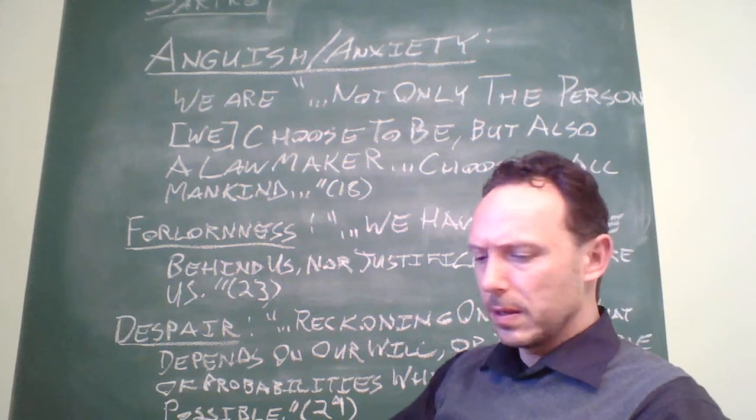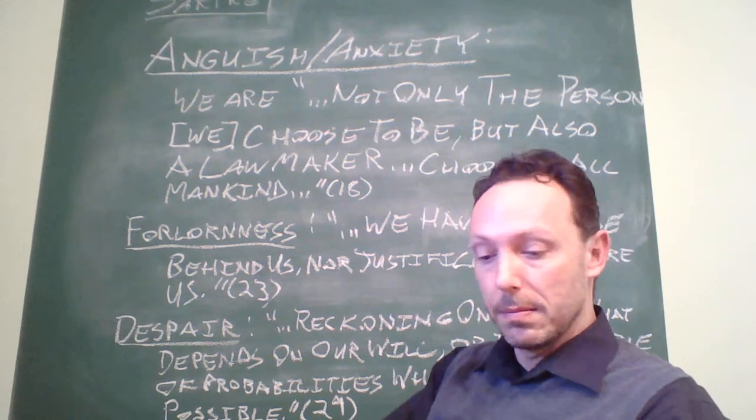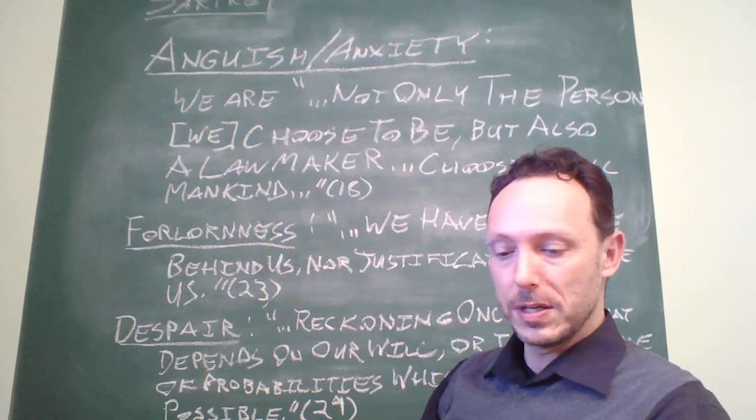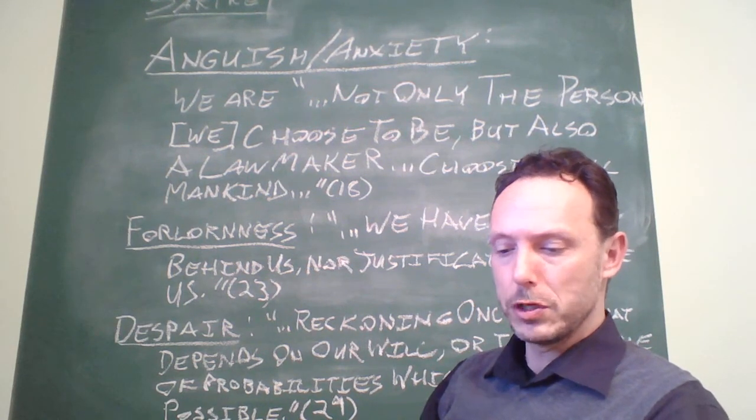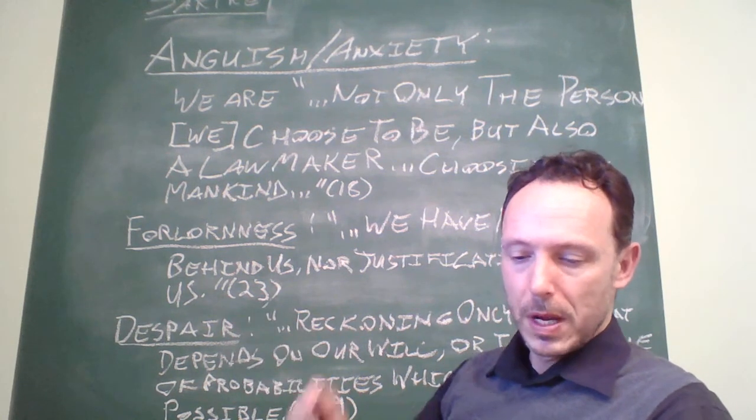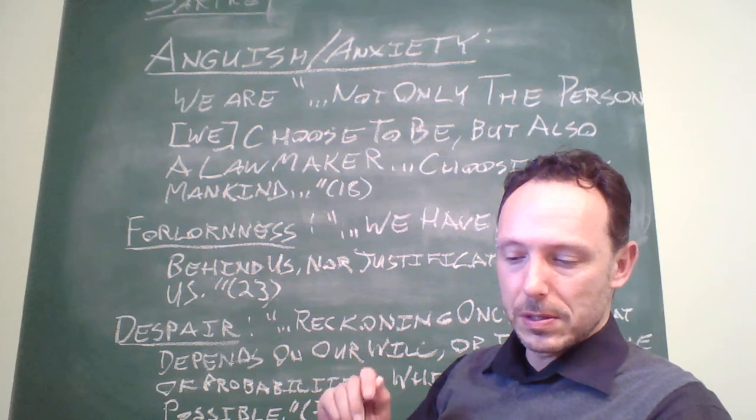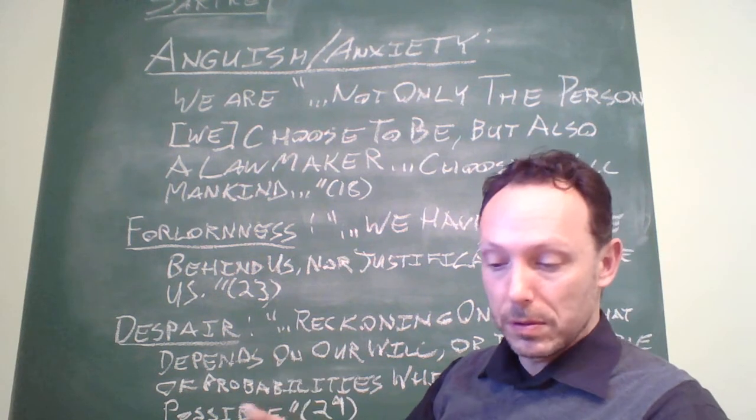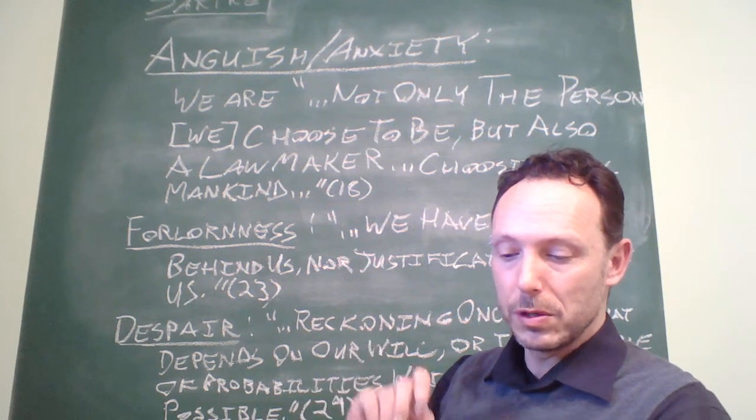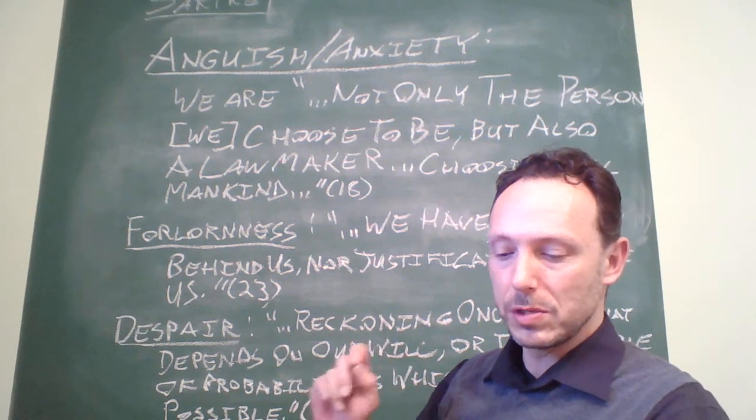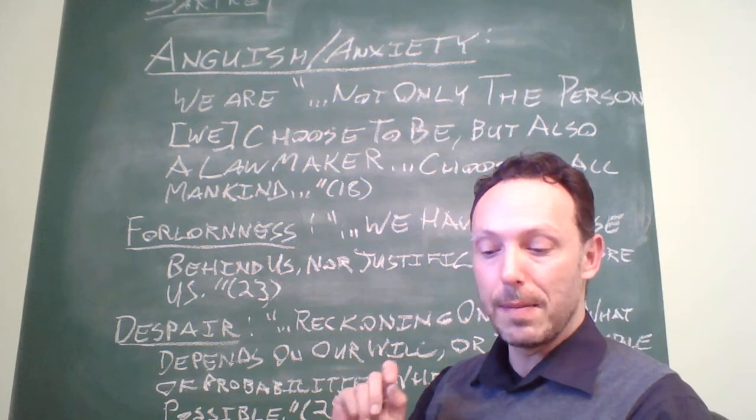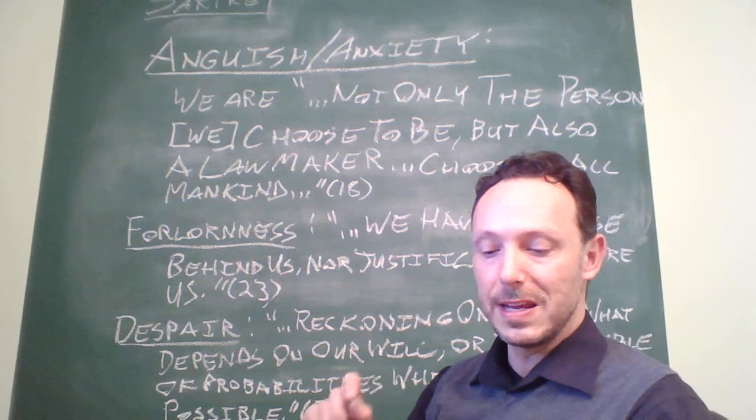There's this passage, the first way that Sartre defines anguish or anxiety is this way, on page 18. First, what's meant by anguish? Existentialists say at once that man is anguish. What that means is this: a man who involves himself and realizes that he is not only the person he chooses to be but also a lawmaker who is at the same time choosing all of mankind as well as himself cannot help escape a feeling of total and deep responsibility.